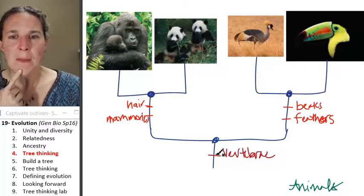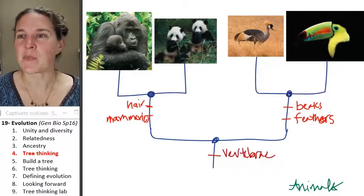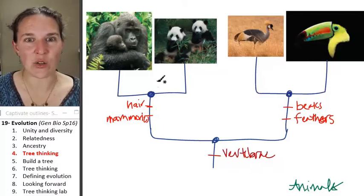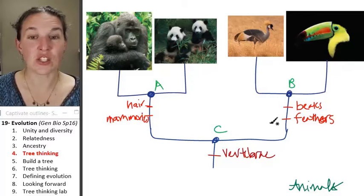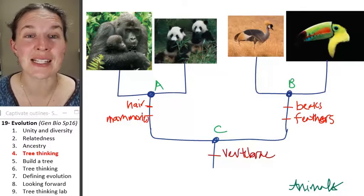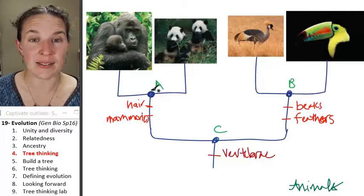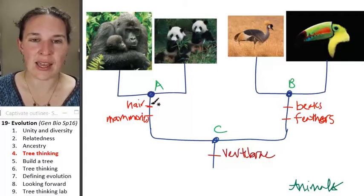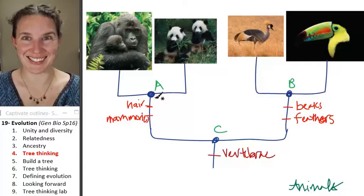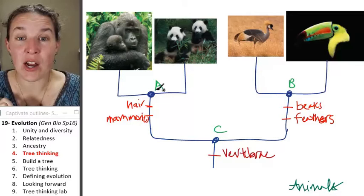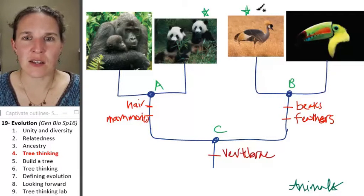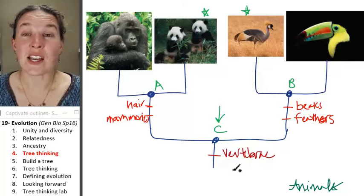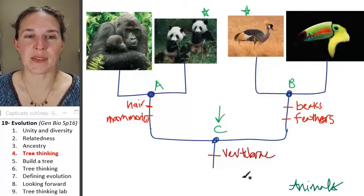We could number the ancestors and talk about relatedness in reference to them. The most recent common ancestor shared by the gorilla and the panda is ancestor A — probably had hair and mammaries. The most recent common ancestor shared by the panda and the crown crane? Follow it back — it's ancestor C, and that ancestor probably had vertebrae. That is how you build a tree and think about how closely things are related to each other.